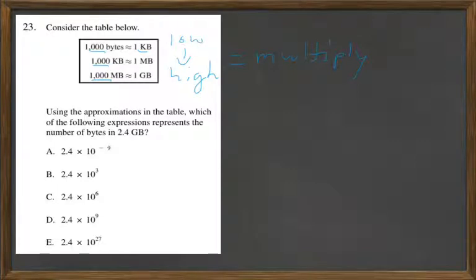And so really you're going to have 2.4 times 10 to the count how many zeros you have. You have 3, 3, and 3, which equals 9 total. So you'd have to the ninth power, which is answer D. Thank you.